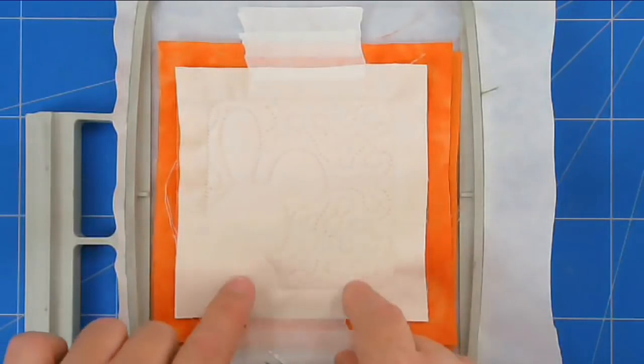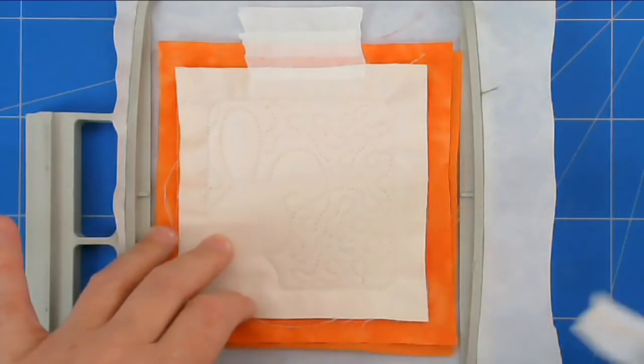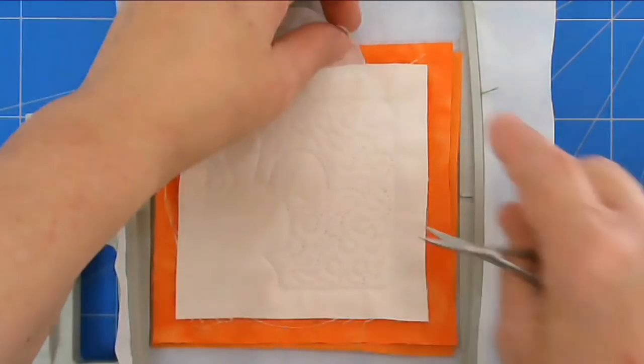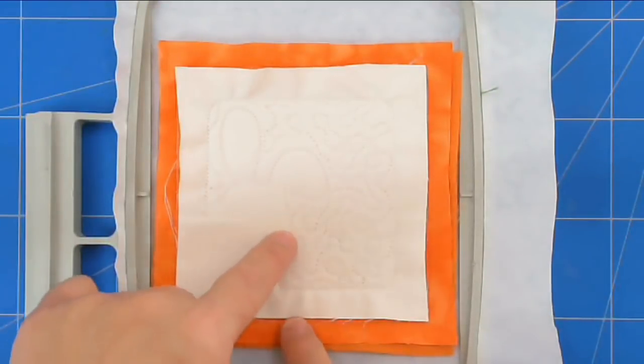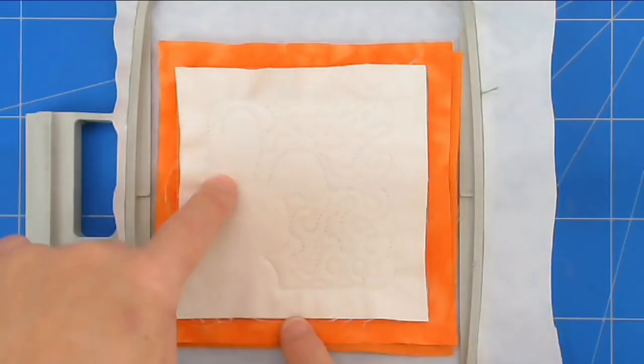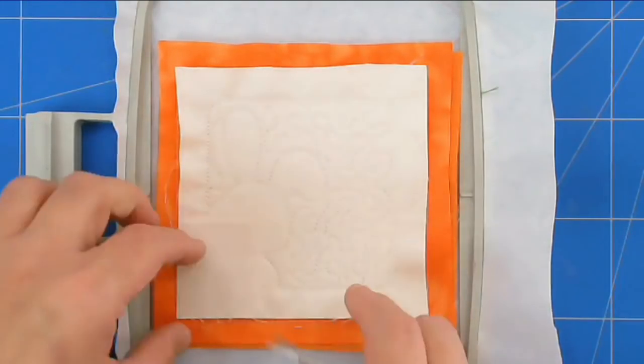We're now going to remove all the excess fabric. We're going to cut all in here around the area where the rabbit's going to be and around the edge.